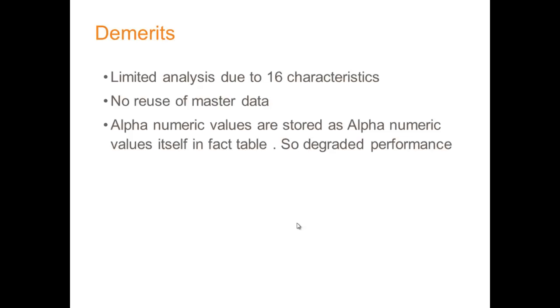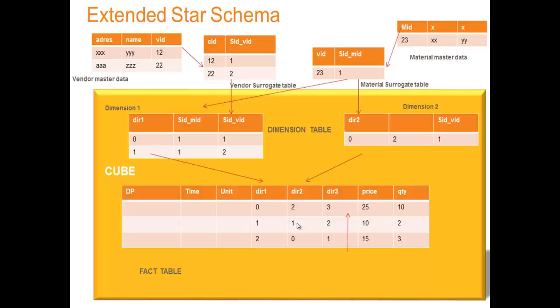The fact table must hold alphanumeric values, which completely degrades the performance of your info cube. These are the disadvantages of star schema. In the extended star schema, we have an intermediate table between the master data table and the dimension table, which is known as a surrogate table.